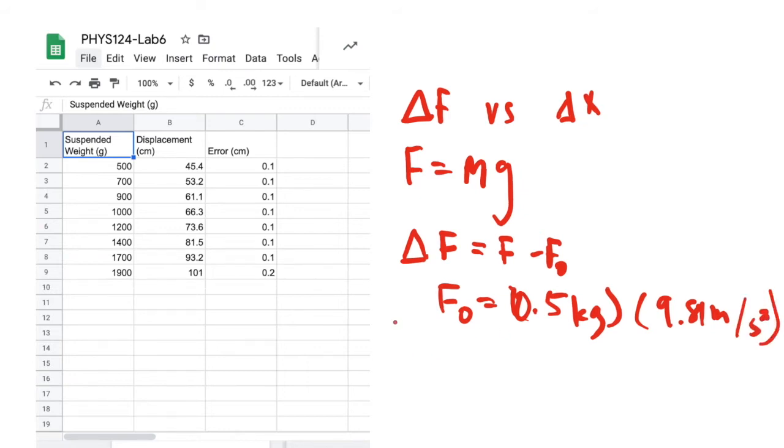Similarly, you'll need to pick the first displacement here as your X0 and then your change in X is going to look something like whatever the X value is minus that 45.4 centimeters or 0.454 meters.